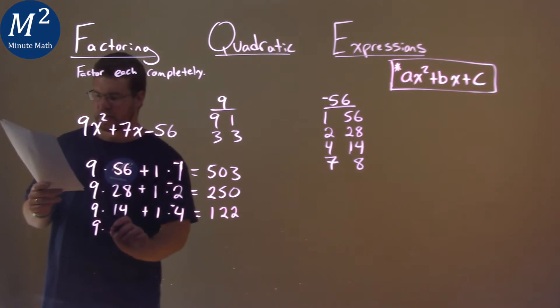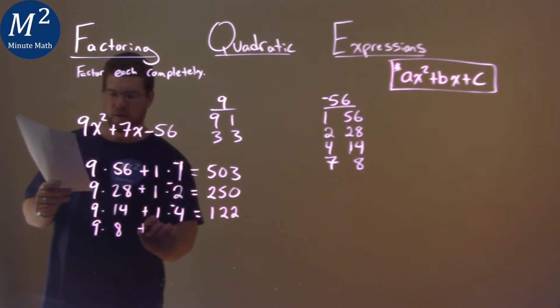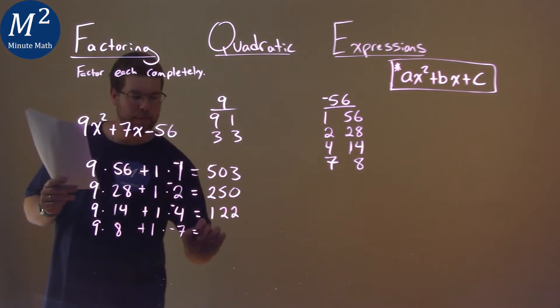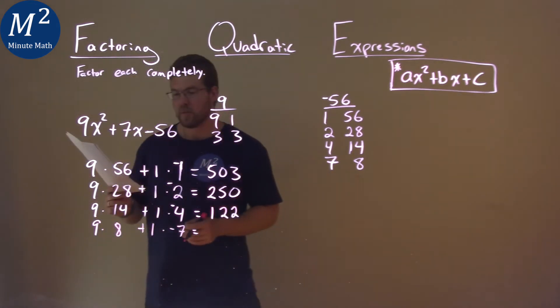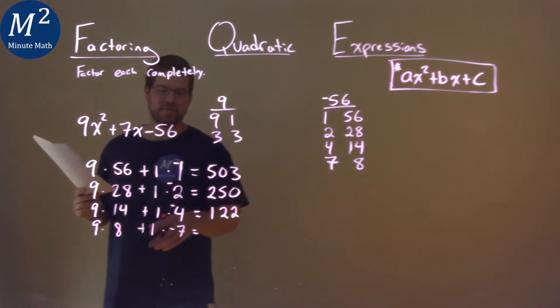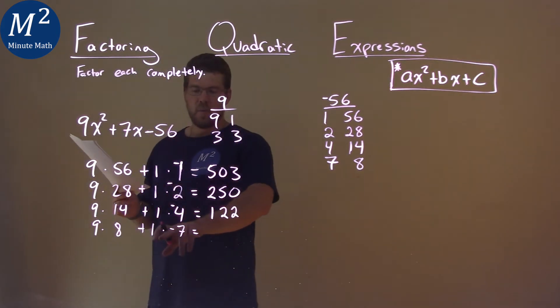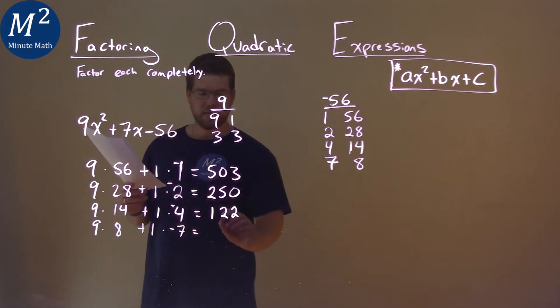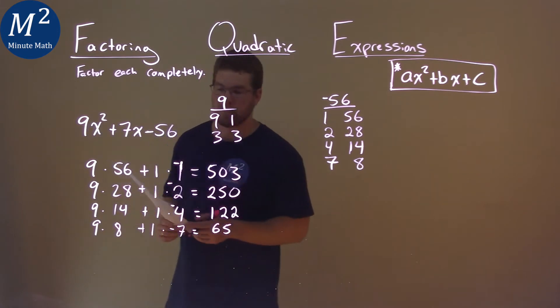Let's do it again. 9 times 8 plus 1 times a negative 7. 1 times 7 is clearly less than 9 times 8. 9 times 8 plus 1 times negative 7 is a 65 here.